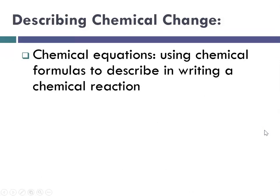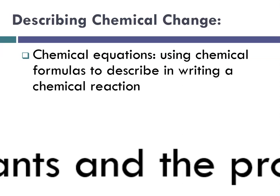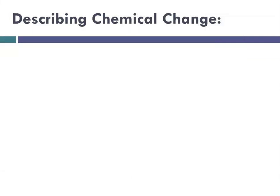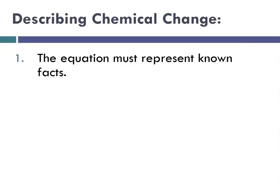So when we describe a chemical change, we use something called a chemical equation. And that's where we write chemical formulas to describe in writing what happened in a chemical reaction. And the reactants and the products must both be included. So what do we need to put into our chemical equation?